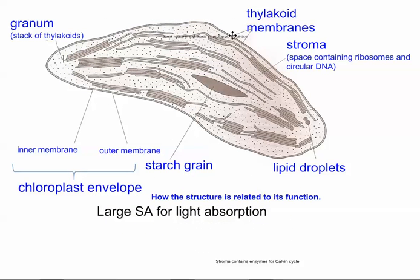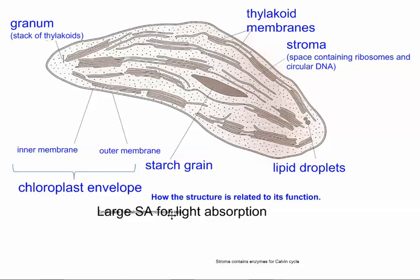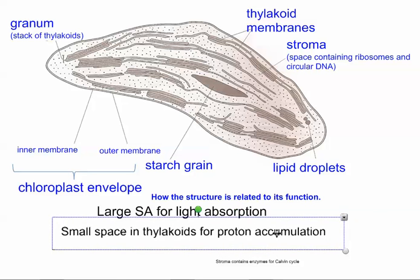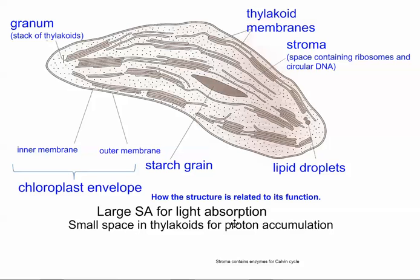Inside the thylakoid space, that's where all the protons are accumulating, building up a concentration gradient. When the protons flow back out from the thylakoid space, you end up with chemiosmosis happening and ATP production.